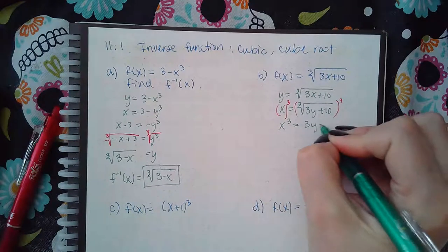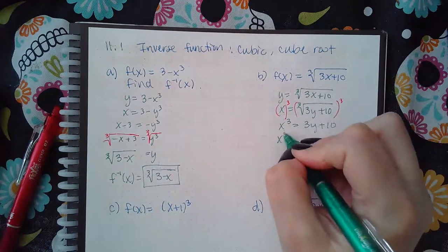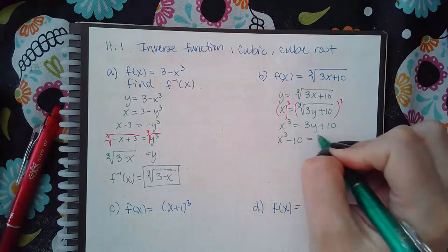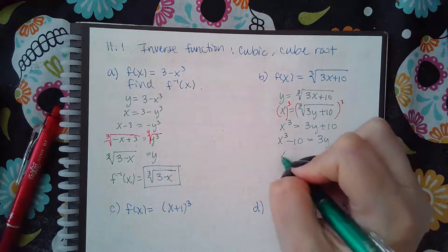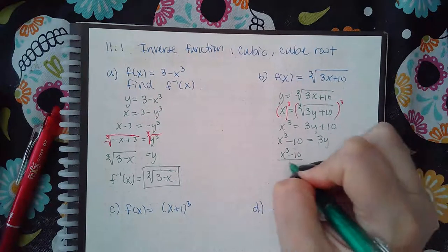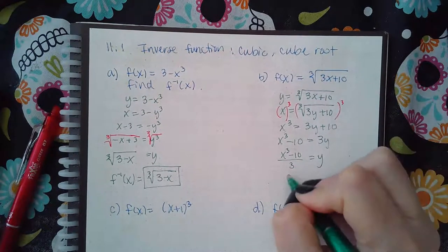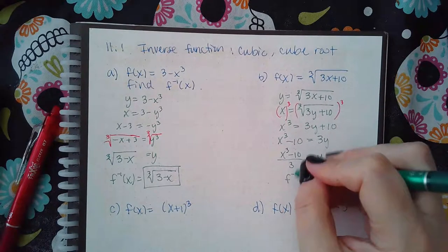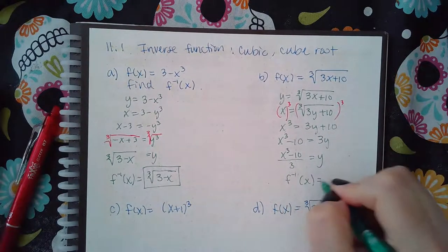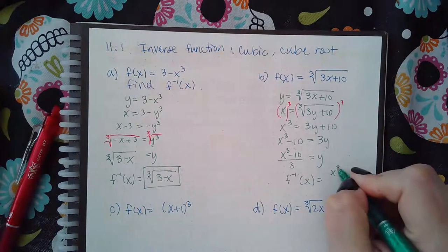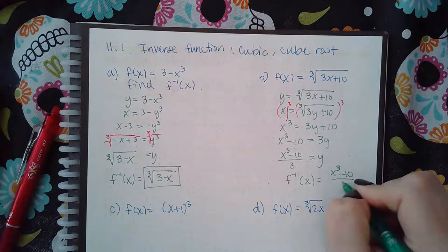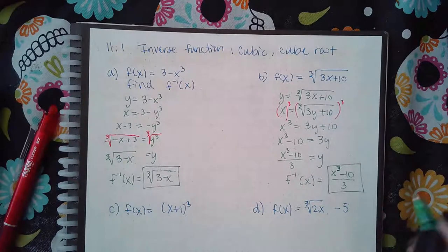So I need it out of the radical first, and then I can minus 10 on both sides, and then I can divide by three on both sides, and then change it to f inverse notation. And that would be what they want there.